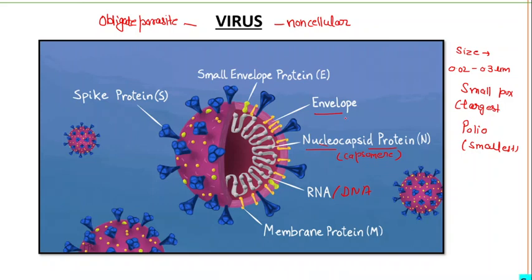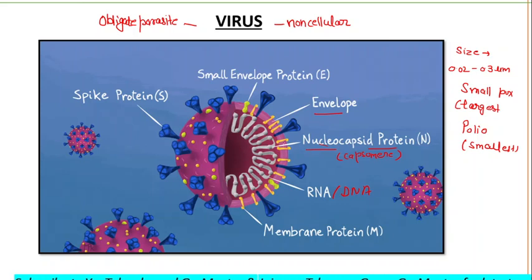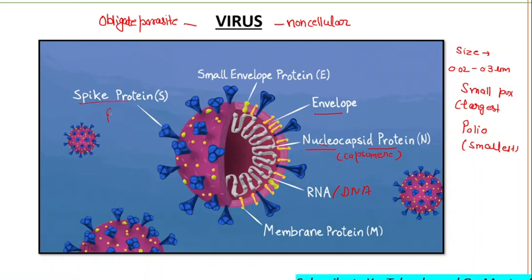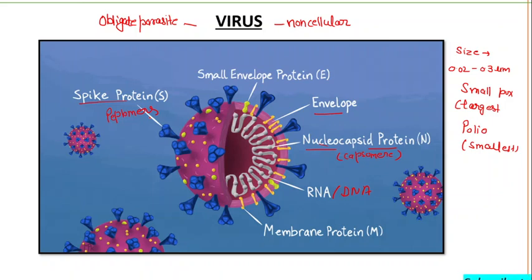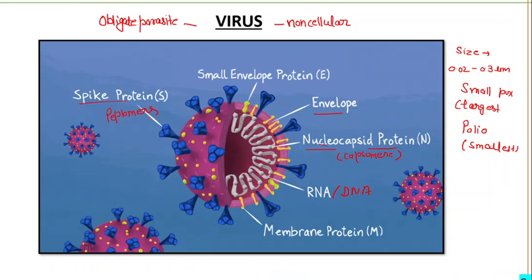In enveloped viruses, the nucleocapsid is surrounded by a lipid bilayer structurally similar to the host lipid membrane. This lipid bilayer consists of spike proteins, also known as peplomers. Viruses that acquire the envelope by budding through the plasma membrane or another intracellular membrane will have a lipid composition that reflects the particular host membrane.